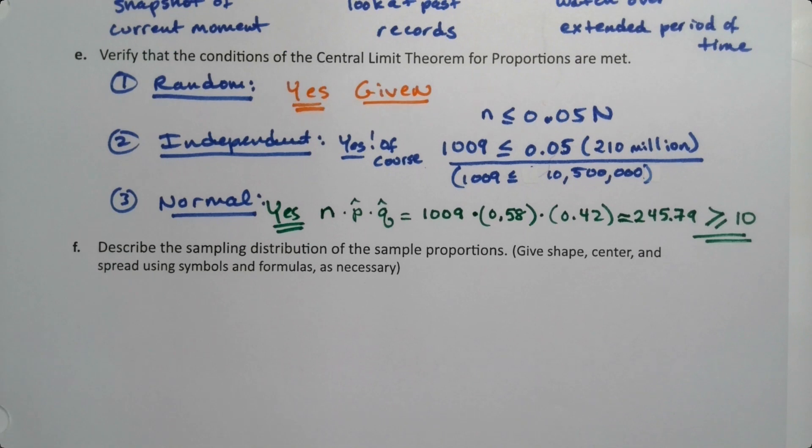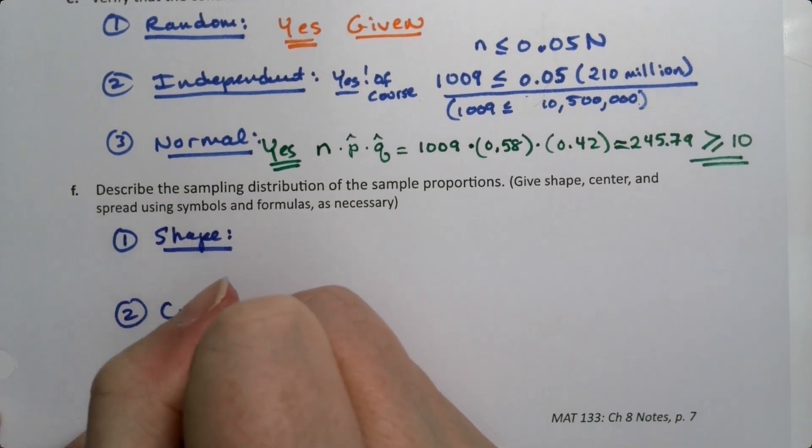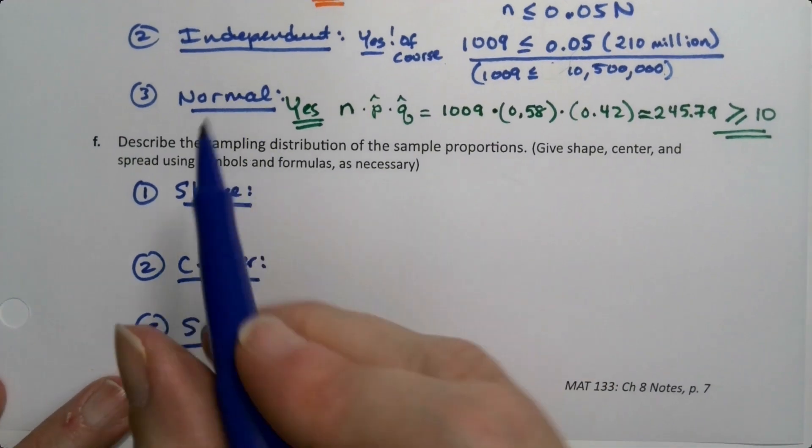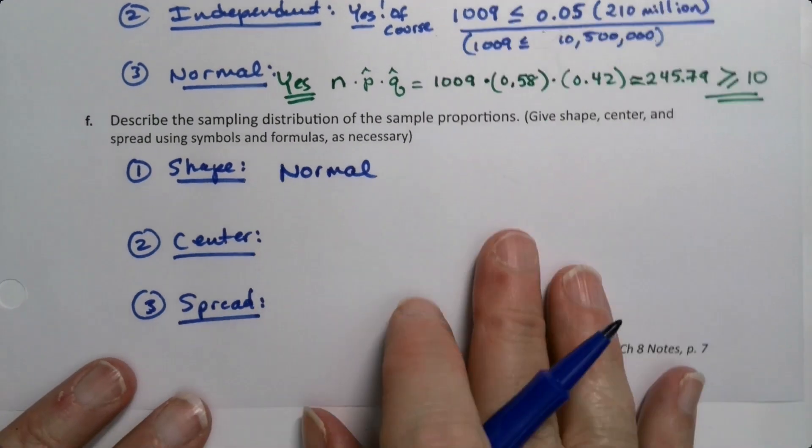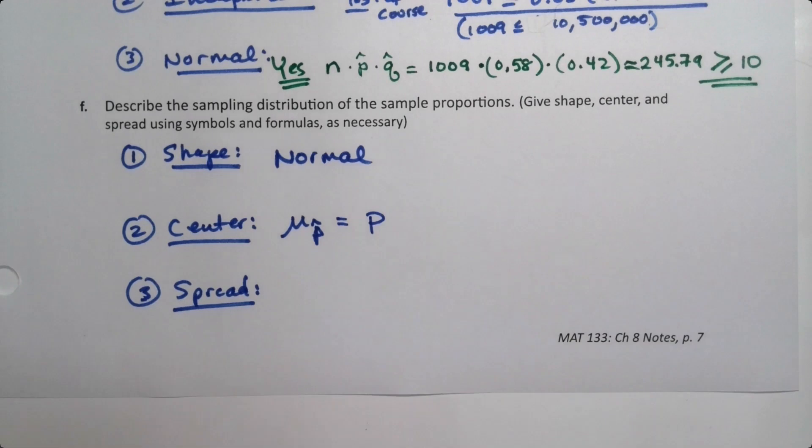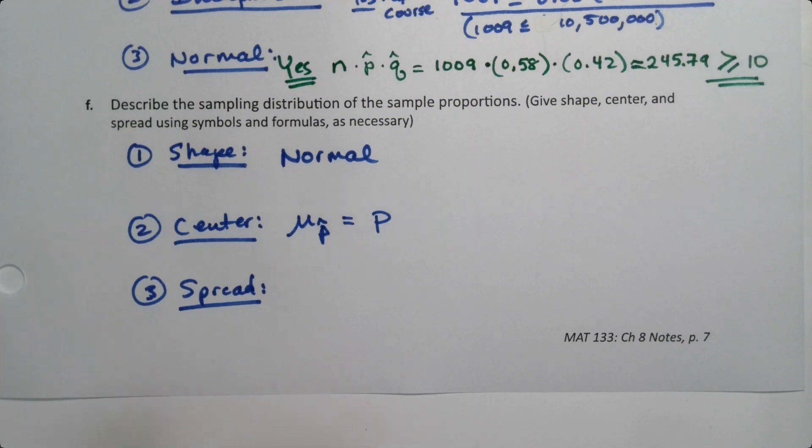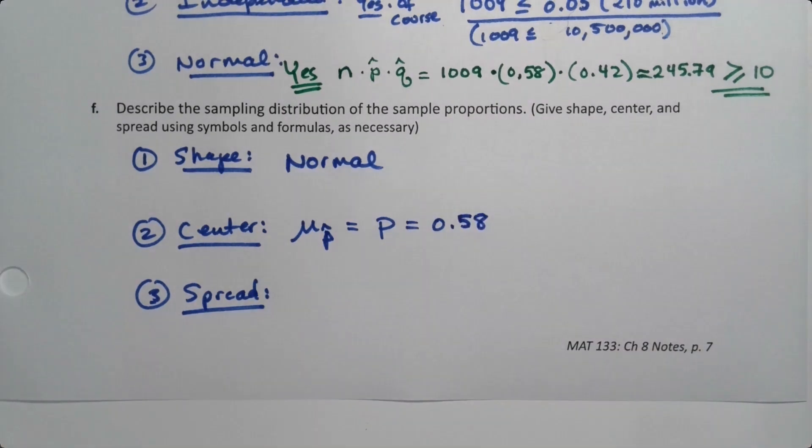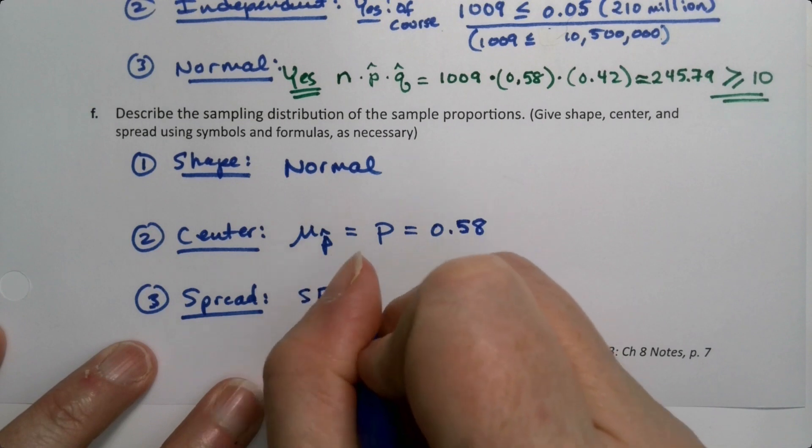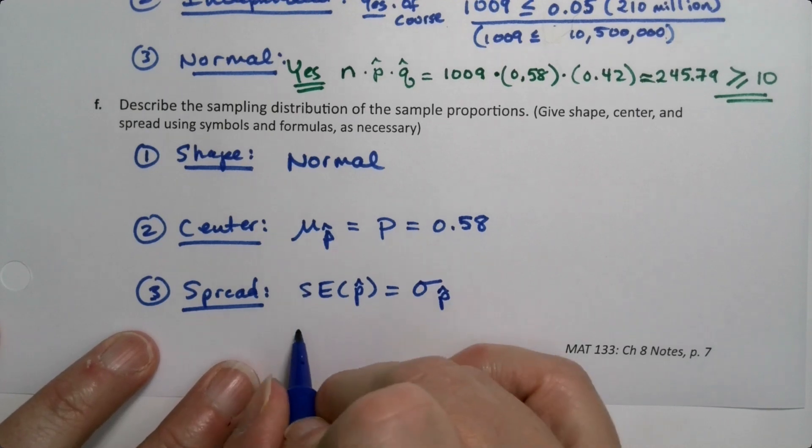All right, now we're going to describe the sampling distribution. The sampling distribution gets described with shape, center, and spread. The shape is normal; we just proved it right here. The center is the mean of the p̂s, which is p. That's what it says in the Central Limit Theorem. So what was p? Well, our best guess is 0.58. That's our best guess for what it is. And then our spread is the standard error of the p̂s, which is σp̂. This is standard error; they mean the same thing.